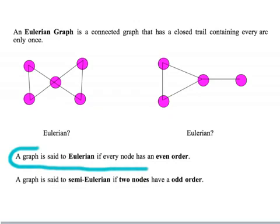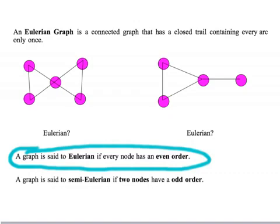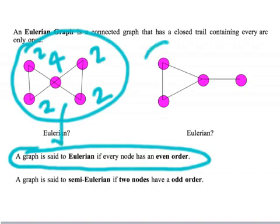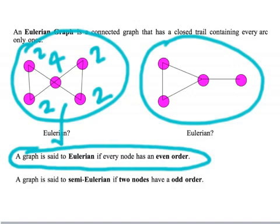A second definition of whether a graph is Eulerian is that every node has an even order. Looking at the left-hand graph, the nodes are of order 2, 2, 4, 2, and 2 — all even — so the graph is Eulerian. On the right-hand graph, the nodes are of order 1, 3, 2, and 2, which are not all even, so that graph is not Eulerian.